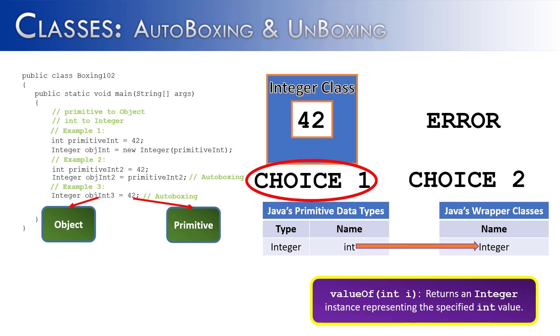So again, here is another example of autoboxing. Autoboxing, the idea of moving from a primitive into an object.